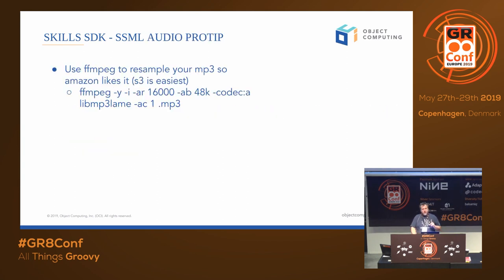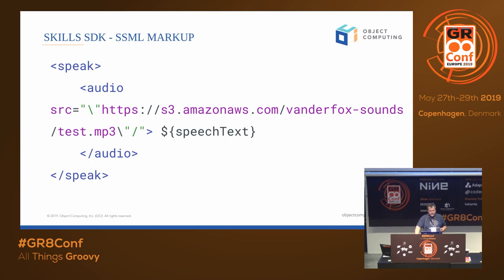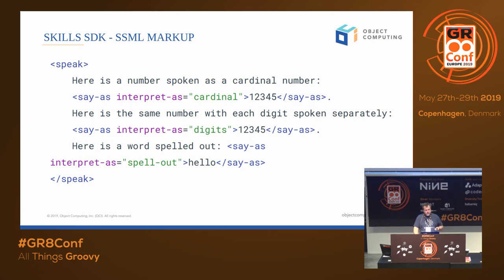There is one caveat: you can use a self-signed cert in development mode only, but the common name needs to match the hostname your skill's running at. Here's what SSML looks like for playing music — you can pull an audio file from S3. You can also do things like pronouncing numbers: speak each digit separately, make it a cardinal number, or spell out a word. If you say spell out 'hello,' it's going to say H-E-L-L-O — that's how you make different types of conversations.